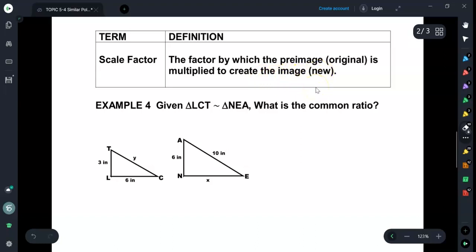Now remember, factors are multiplication. The word factor is multiplication. When you factor, when you use FOIL with polynomials, that's because you're multiplying factors together. If something is increased by a factor of 5, that means it is multiplied by 5. So let's look at these two triangles and see what the scale factor is.